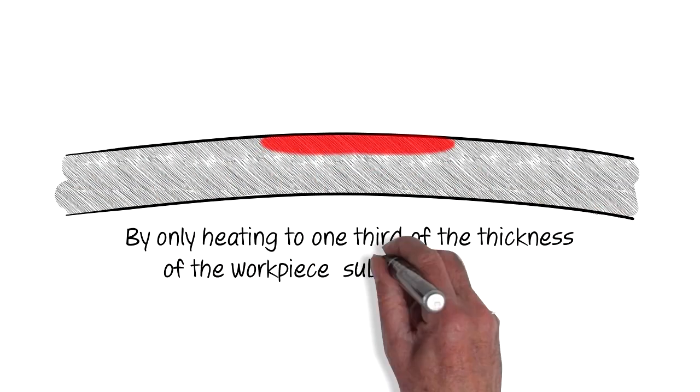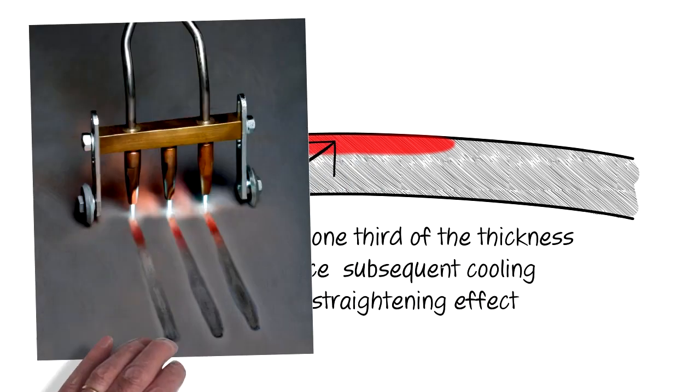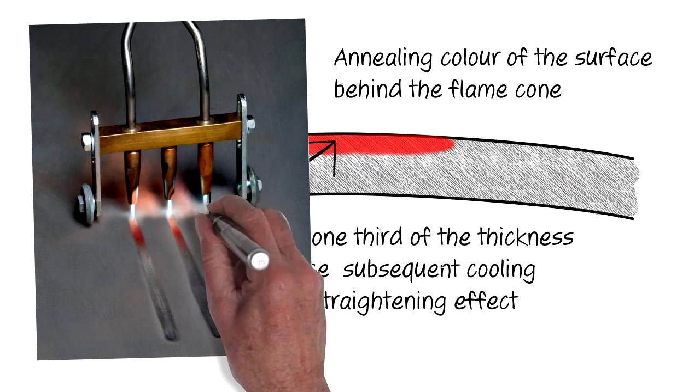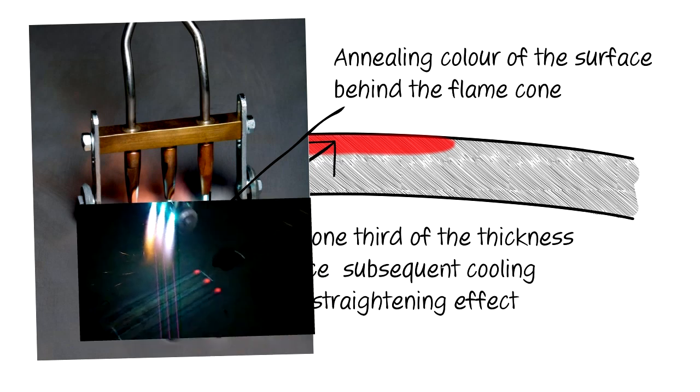By only heating to one third of the material thickness of the workpiece, subsequent cooling provides the straightening effect. The depth of heat penetration into the workpiece is monitored by the annealing colour of the surface directly behind the flame cone of the burner. You can clearly see the lines on this photo of a work in progress.